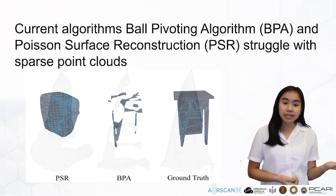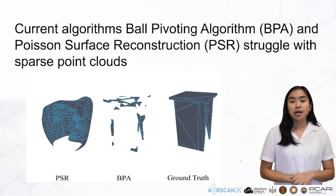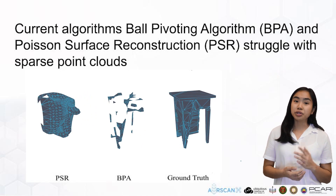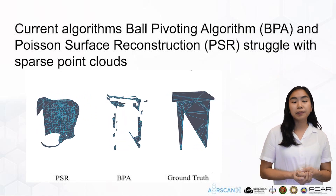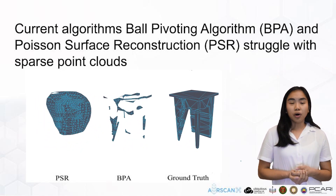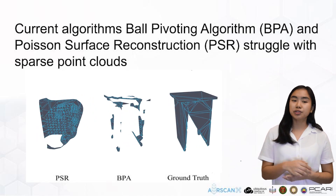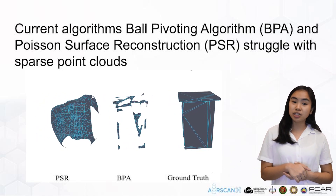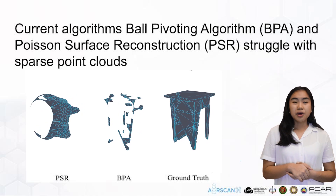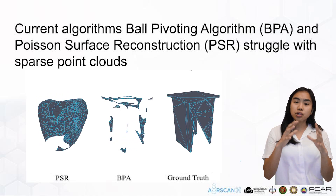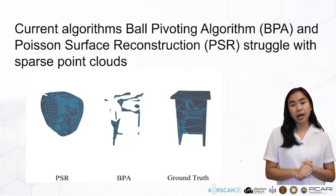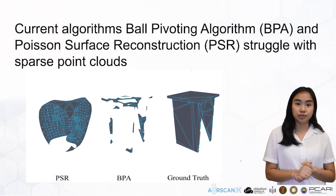BPA is limited by the proximity of points as the basis for forming surfaces. When the given points are sparse, BPA is unable to connect these points. On the other hand, PSR determines the surface by casting the problem as a spatial Poisson problem. The formed surfaces are closed and continuous, but the algorithm fails to capture sharp edges and high curvature.